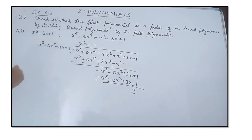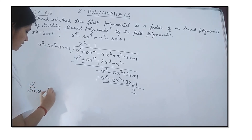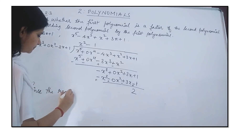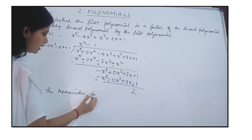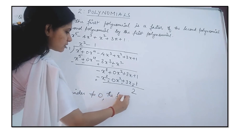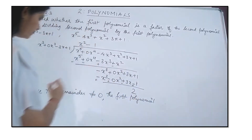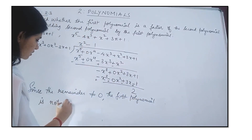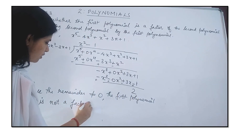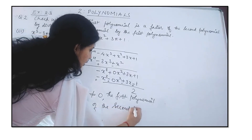But here we get 1 + 1 = 2 for the constant terms. That means the remainder is not 0. Since the remainder is not equal to 0, the first polynomial is not a factor of the second polynomial.